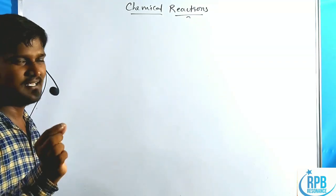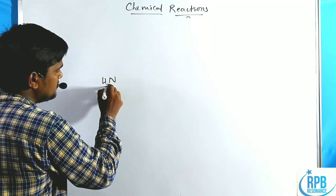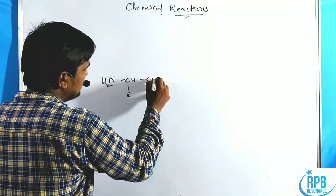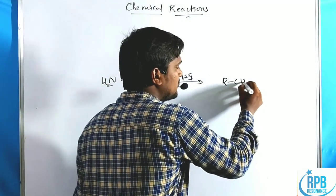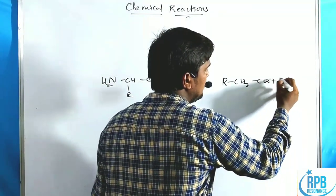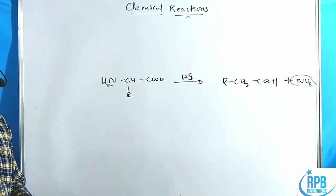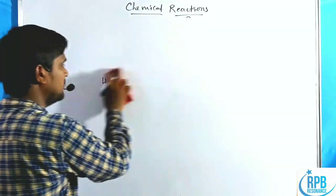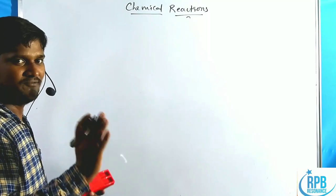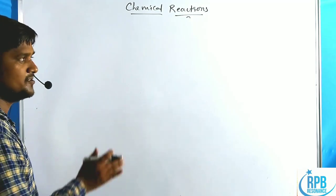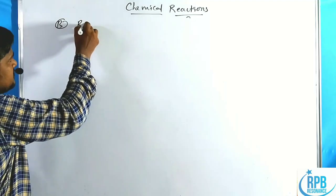Before going to COOH reactions, the final reaction with NH2 is treatment with strong HI. NH2-CHR-COOH treated with HI gives R-CH2-COOH with elimination of ammonium derivatives. This is the eleventh reaction with respect to the NH2 functional group.